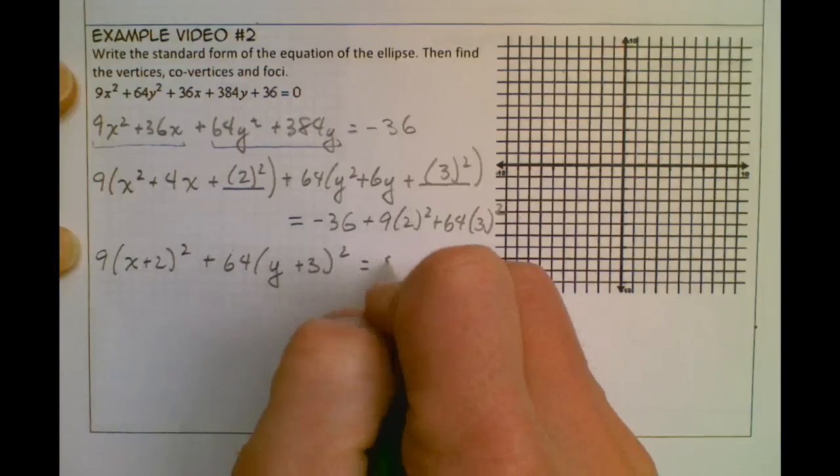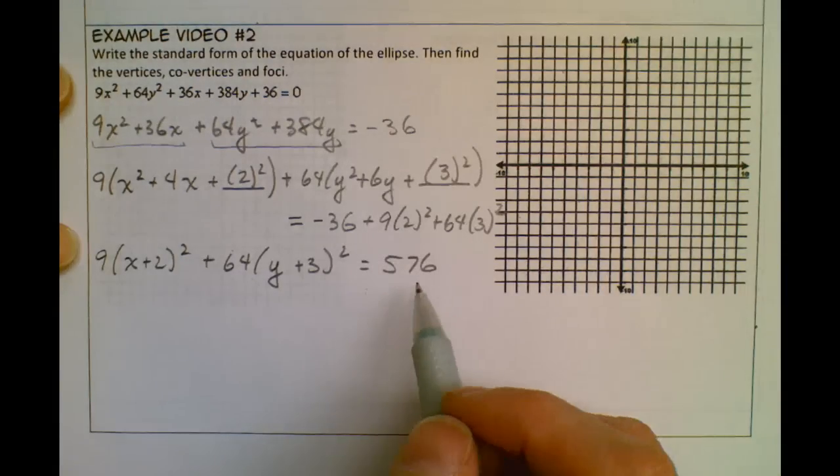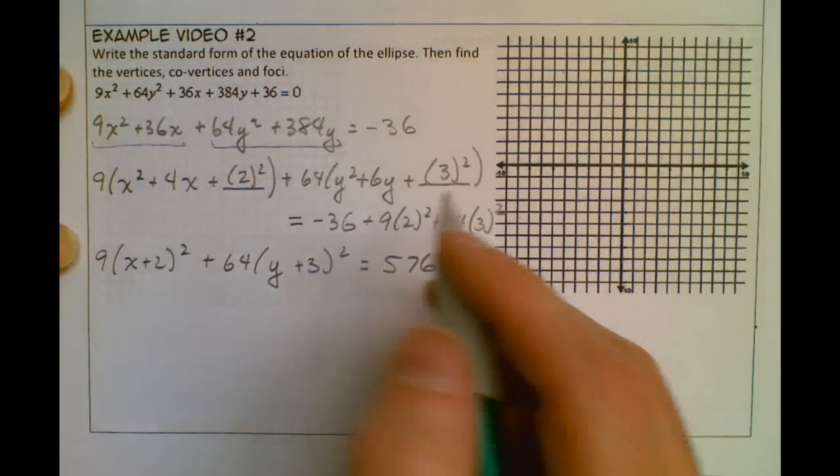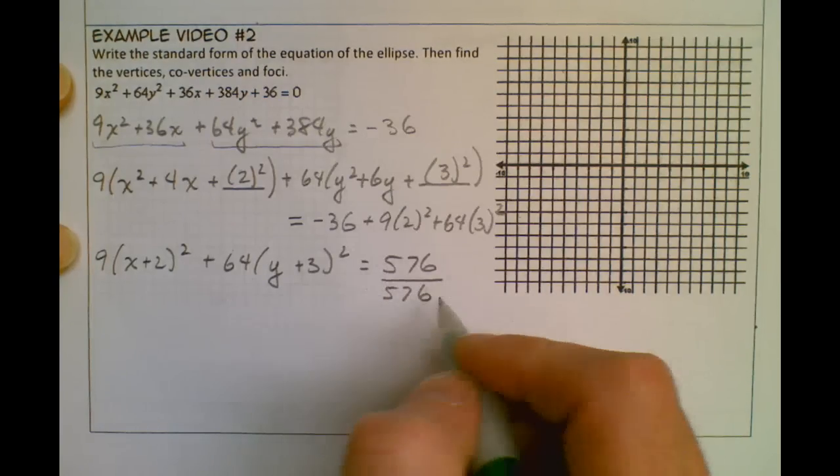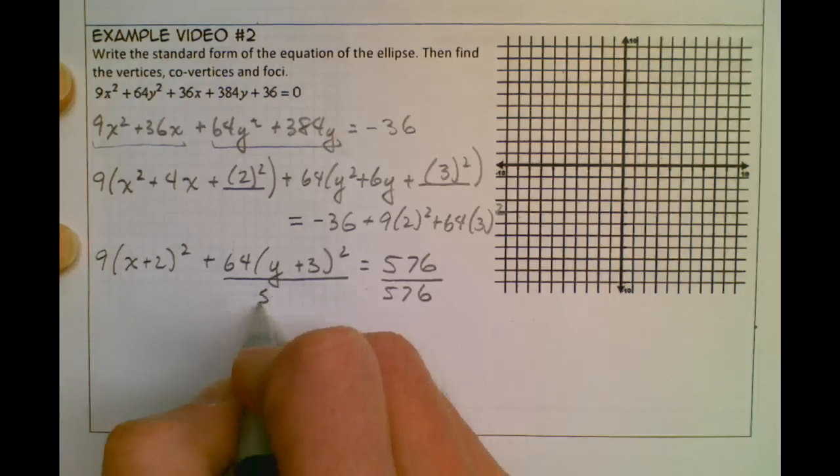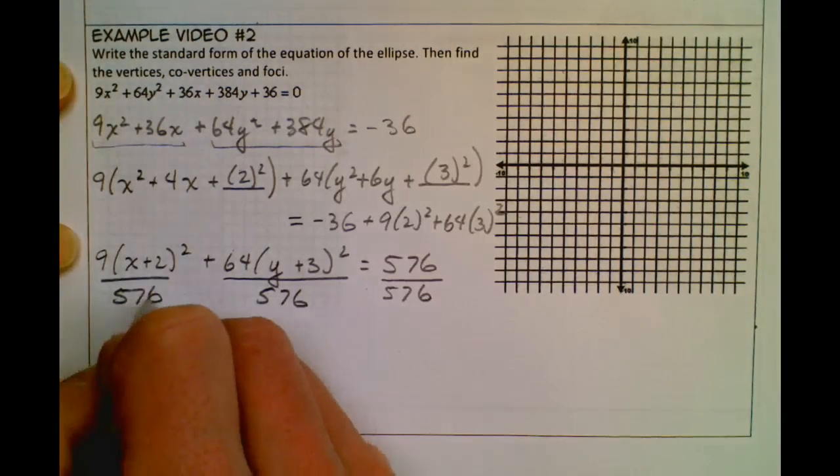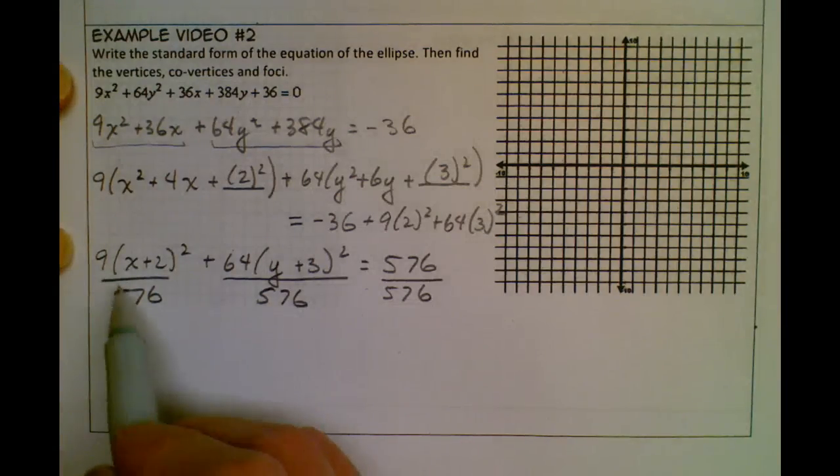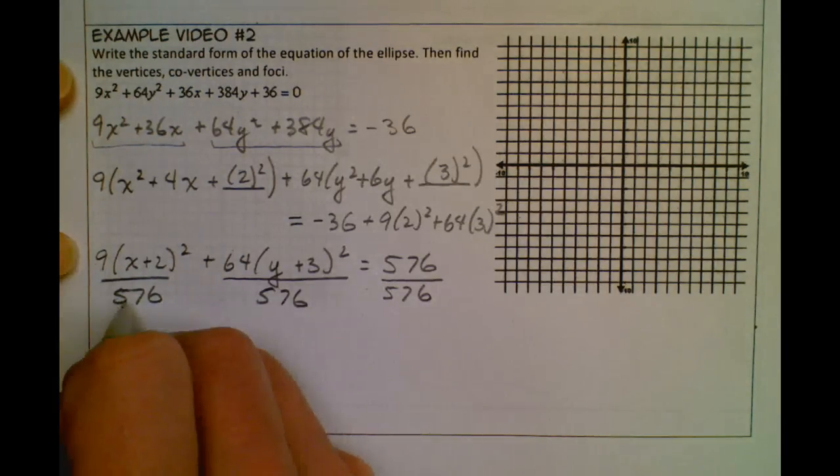Now our standard form for an ellipse has to equal 1, so I'm going to divide everything by 576, and then I just make the right side 1. So if I divide that by 576, I have to divide these two by 576 as well. I'm going to simplify 9 over 576, however you want to reduce that is fine, but 9 goes into 576 64 times.